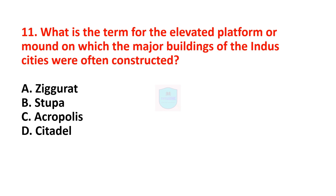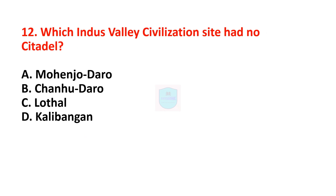Next question: what is the term for the elevated platform or mound on which the major buildings of the Indus cities were constructed? This is an important question. Correct answer is citadel. Citadel is the term for the elevated platform or mound on which the major buildings of the Indus cities were constructed.